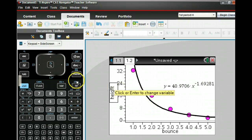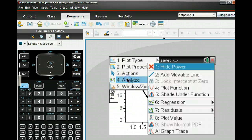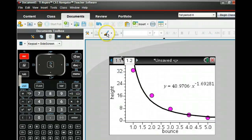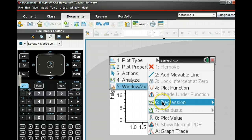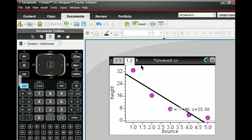I graphed it. And if I go to menu, analyze, regression, and I'm going to choose linear. I'm not sure that's the best fit for this data. It doesn't seem to model it as nice as the other one does.